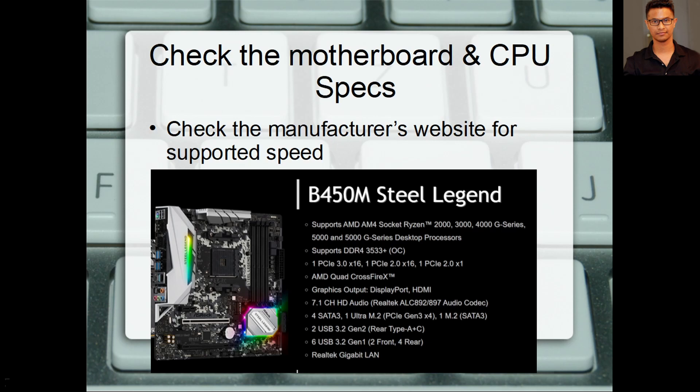But when I paired the same motherboard with a 5000 series chip like the Ryzen 5 5600, I was able to push my RAM speed up to 3600MHz. So your CPU also matters.